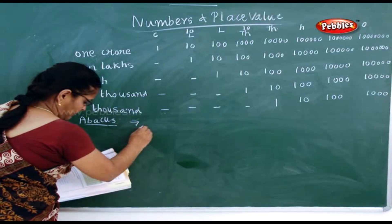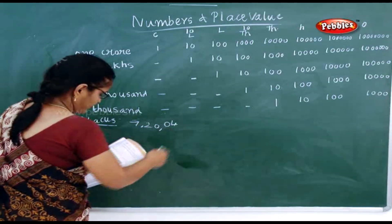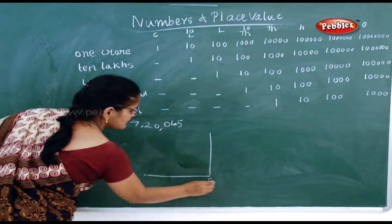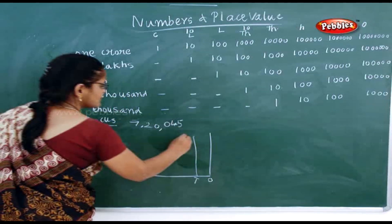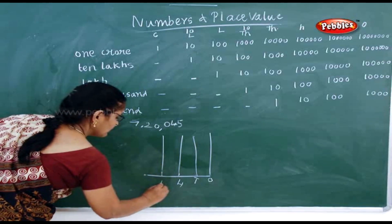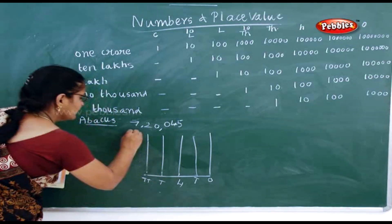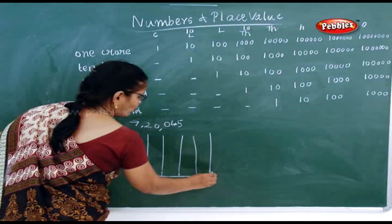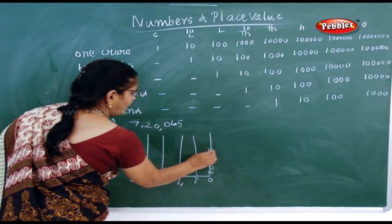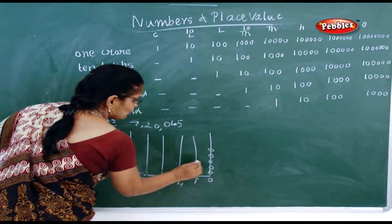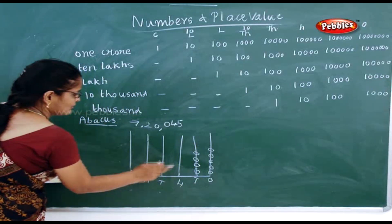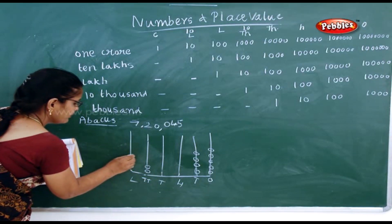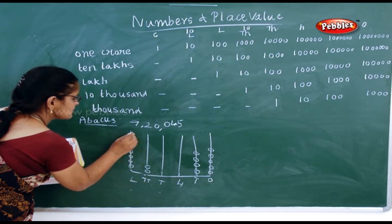Next sum: 7,20,045. How will you do this? Same way — ones, tens, hundreds, thousands, ten-thousands, and the next place after ten-thousands is lakhs. Place 5 rings in ones, 4 rings in tens, nothing in hundreds, nothing in thousands, 2 rings in ten-thousands, and 7 rings in lakhs.